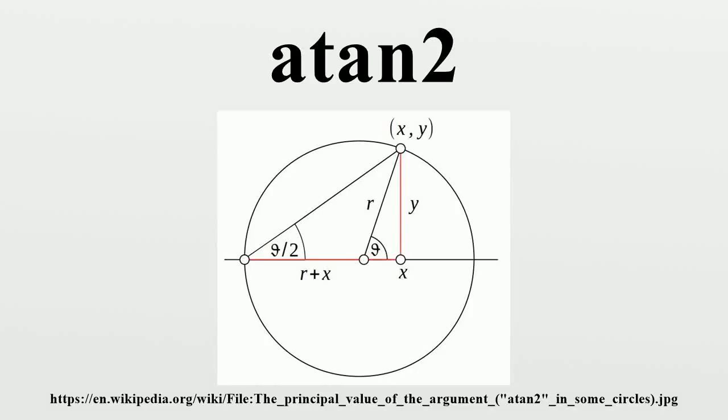In a variety of computer languages, the function atan2 is the arctangent function with two arguments. The purpose of using two arguments instead of one is to gather information on the signs of the inputs in order to return the appropriate quadrant of the computed angle, which is not possible for the single argument arctangent function.